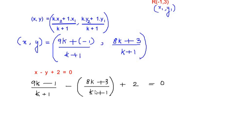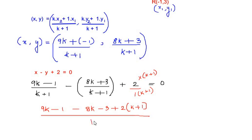Now here we can see the first two terms have the denominator k+1, so let us multiply the numerator and denominator of 2 with k+1 to get a common denominator. We write it as (9k-1 - 8k-3 + 2(k+1))/(k+1) = 0.